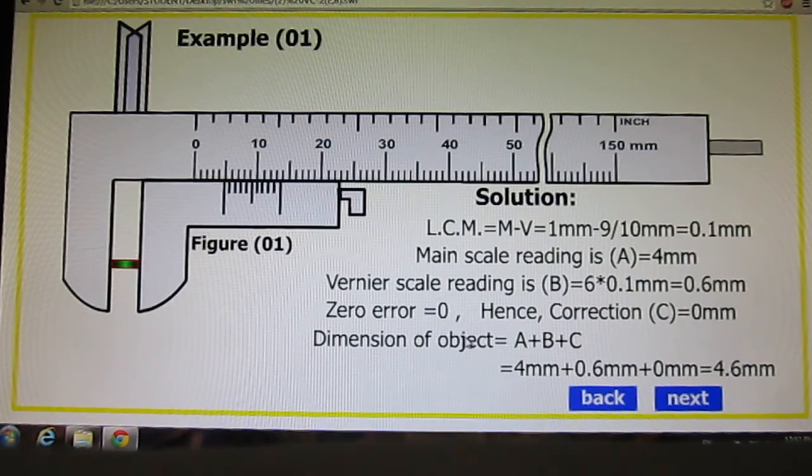Zero error is 0, so we have no correction. Dimension of object is A+B+C, that is 4mm plus 0.6mm. Correction is 0, so our answer is 4.6mm.